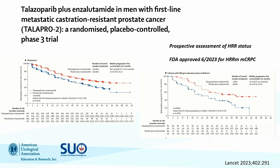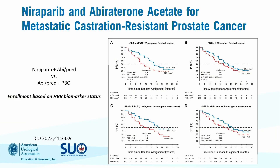TALAPRO-2 is talazoparib plus enzalutamide versus enzalutamide plus placebo in a double-blind phase three trial. Patients were untreated and stratified at randomization by HRR status and prior therapy. The primary endpoint was radiographic progression-free survival in the intention-to-treat group. Results are impressive: a 77% decreased risk of radiographic progression and death in BRCA-mutated patients versus only 34% in non-BRCA-mutated patients, leading to FDA approval in June of last year.